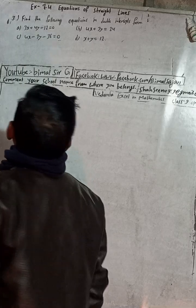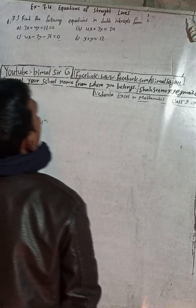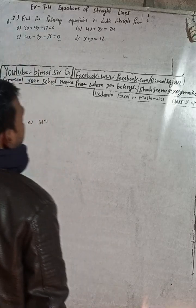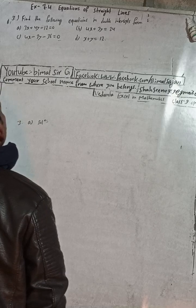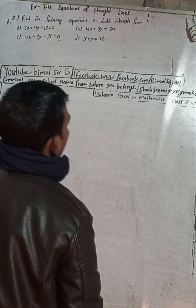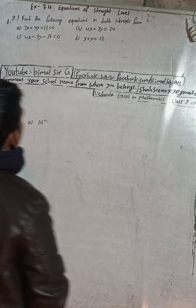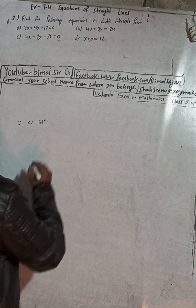Here the question is Exercise 7.4, equations of straight lines, from Vedant Excel in Optional Maths, class 9 optional mathematics. The question is: find the following equations in double intercept form. There are 4 questions. I am going to solve number A now.